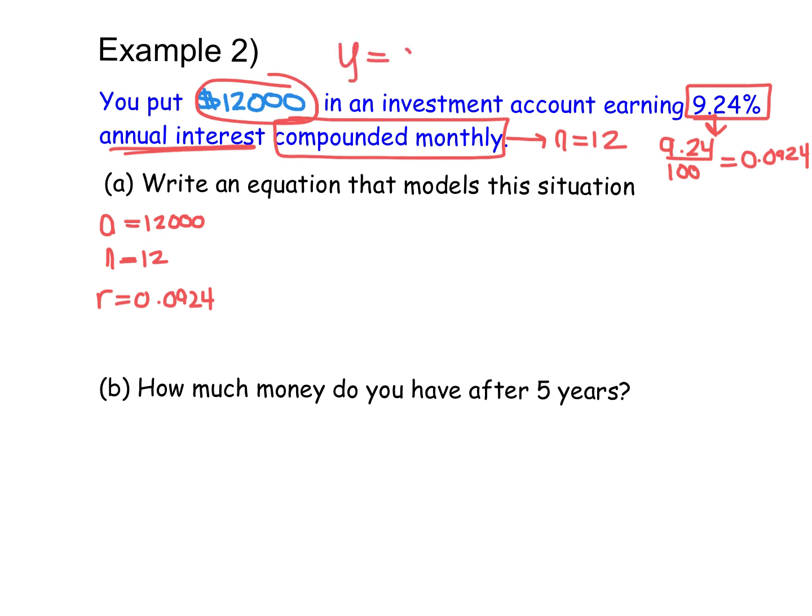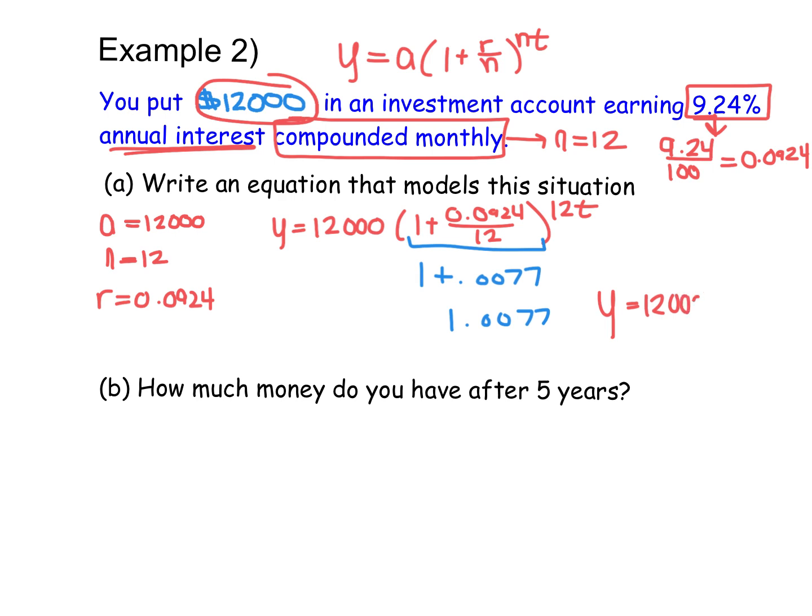We don't yet know what our T value is. Just to refresh your memory, we have Y equals A times (1 plus R over N) to the power of NT. So if we substitute in our values, we have Y is equal to 12,000 times (1 plus 0.0924 divided by 12) all to the power of 12 times T. We always want to simplify this part inside of the parentheses if we can. So I'm going to take 0.0924 and divide it by 12, so I end up with 1 plus 0.0077. Add 1 to that, and we get 1.0077. So our equation here ultimately is going to be Y equals 12,000 times 1.0077 to the power of 12T. So that's what I'm going to use in part B.